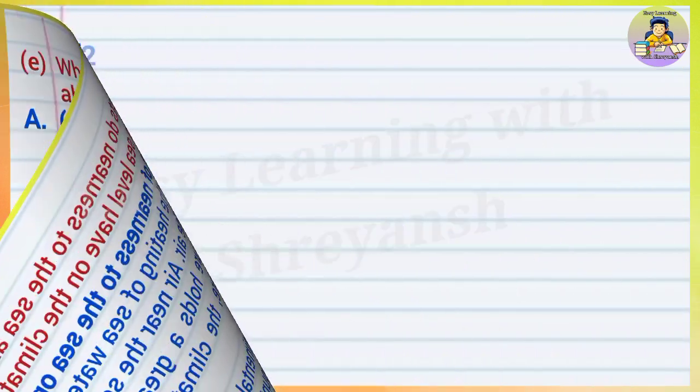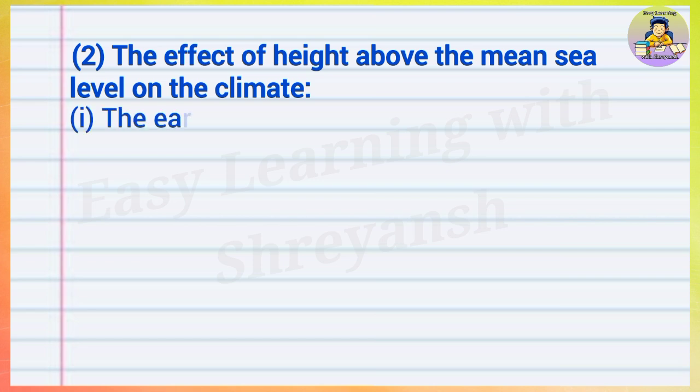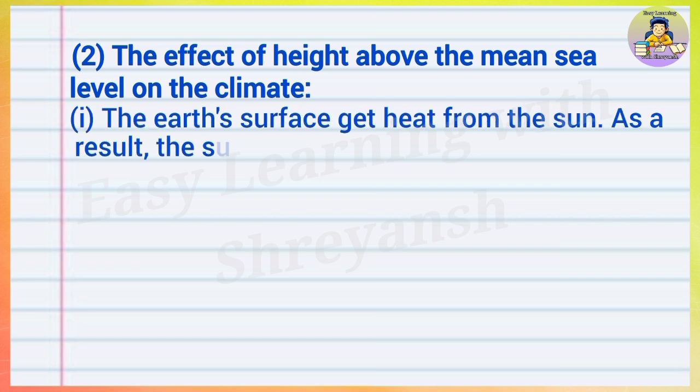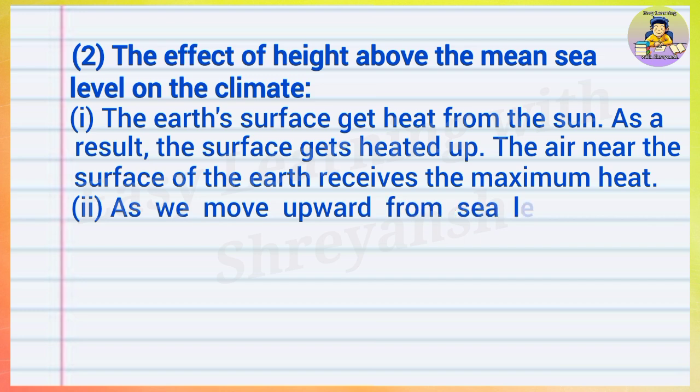The effect of height above the mean sea level on the climate: The Earth's surface gets heat from the sun. As a result, the surface gets heated up. The air near the surface of the Earth receives the maximum heat. As we move upward from sea level, the temperature of air decreases.